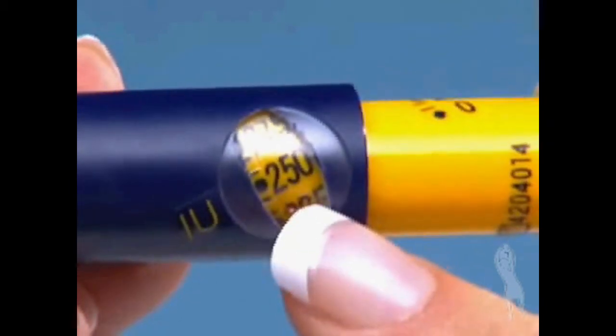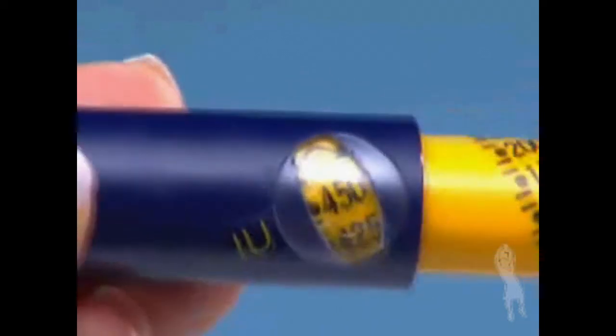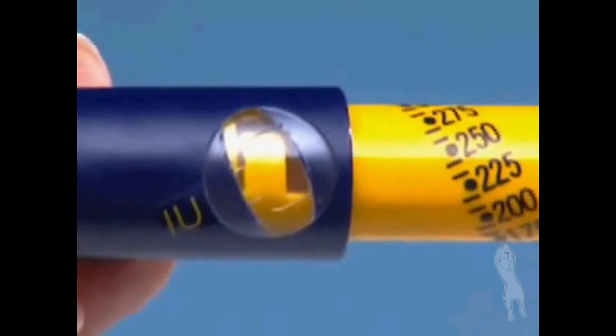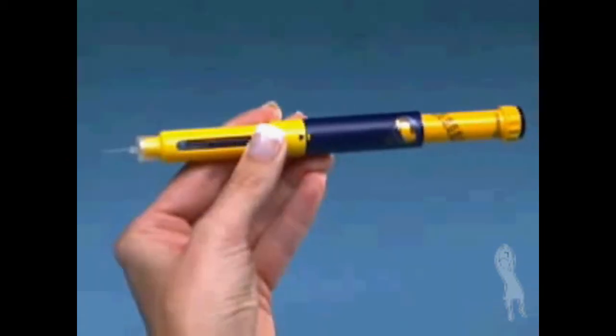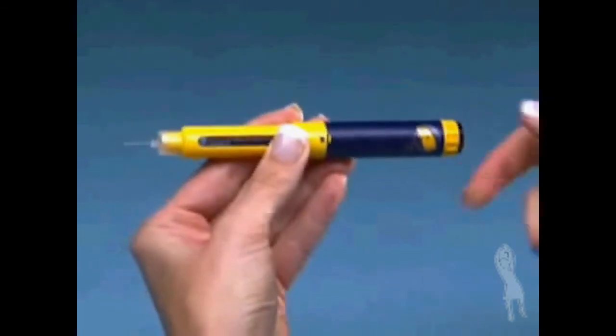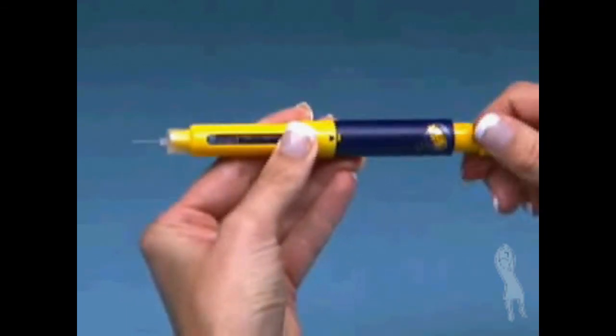If by mistake you dial past the correct number, do not try to turn the dosage knob backward to fix the mistake. Continue to turn the dosage knob in the same direction past the 450 units mark, as far as it will turn. The dosage scale must move freely. Push the injection button in all the way. Dial again starting from 0 upwards.